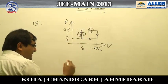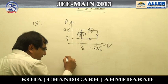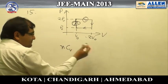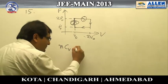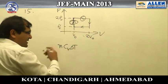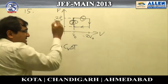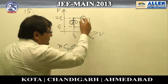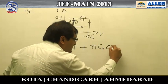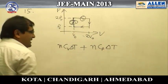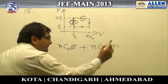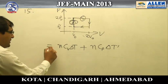So we need to calculate heat only for these two stages. For the isochoric process, heat supplied is N·CV·ΔT, and for the isobaric process, heat supplied is N·CP·ΔT.